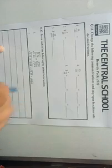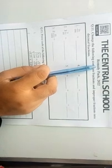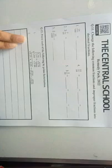Today we will solve question number 11, that is: change the following common fractions and improper fractions into decimal fractions. Students, we are given common fractions and some improper fractions and we have to convert these fractions into decimal fractions. Question number 1 is 54 over 100.